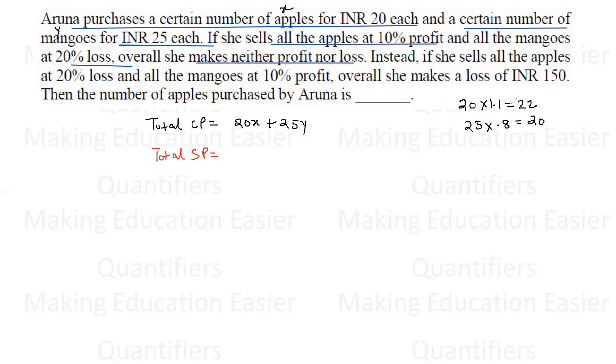22 rupees for one apple, so for X apples we get 22X. Similarly for mangoes we get 20Y. Because there is no profit no loss, total cost price equals total selling price. So we get 2X = 5Y.